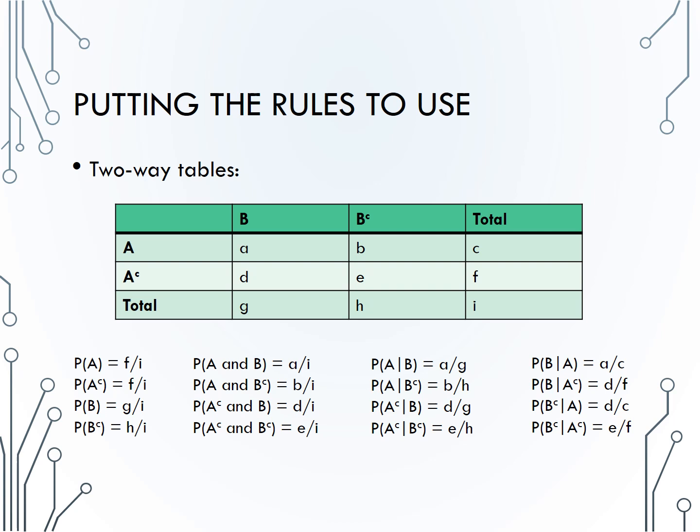If you are looking for a given or conditional probability, the denominator becomes the total for the event you conditioned on. For instance, if you condition on event B occurring, the denominator is the total for B, letter G. If you condition on event A complement occurring, the denominator is the total for A complement, letter F.